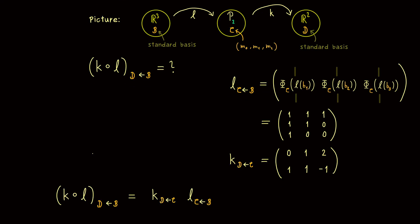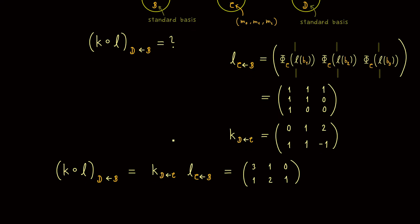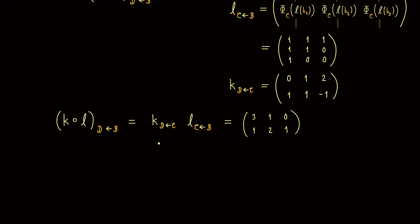Now for the last step we just use the formula from above, which means we calculate one matrix product. We simply multiply the matrix for K by the matrix for L, putting columns and rows together, and we get (3,1) in the first column, (1,2) in the second column, and (0,1) in the last column. This is the matrix representation of K∘L with respect to the standard basis in R³ and the standard basis in R². This formula is really helpful because it allows us to do all the calculations on the matrix level.